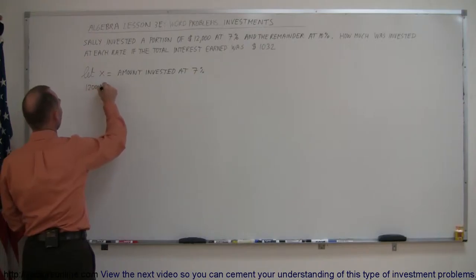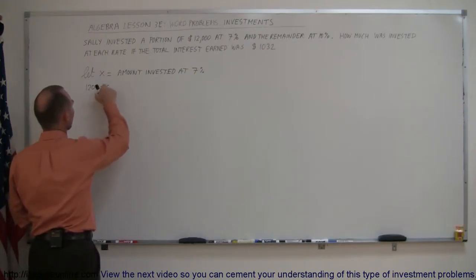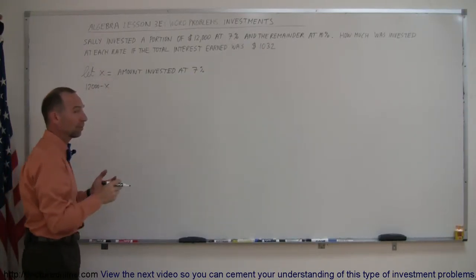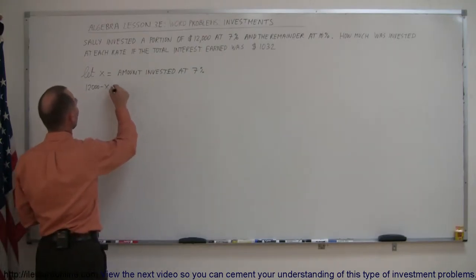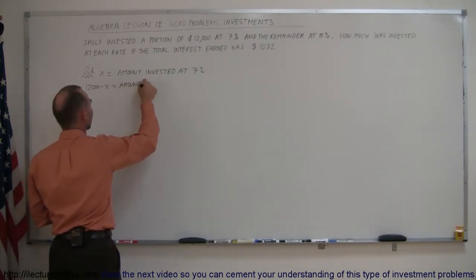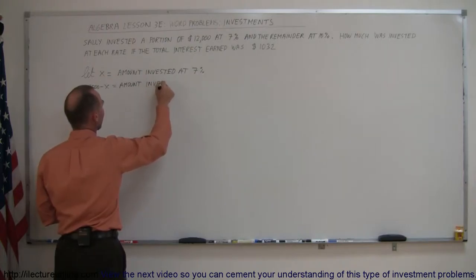taking $12,000 minus x. We take the total invested minus what we've invested at 7%, and what's left over is equal to the amount invested at 10%.